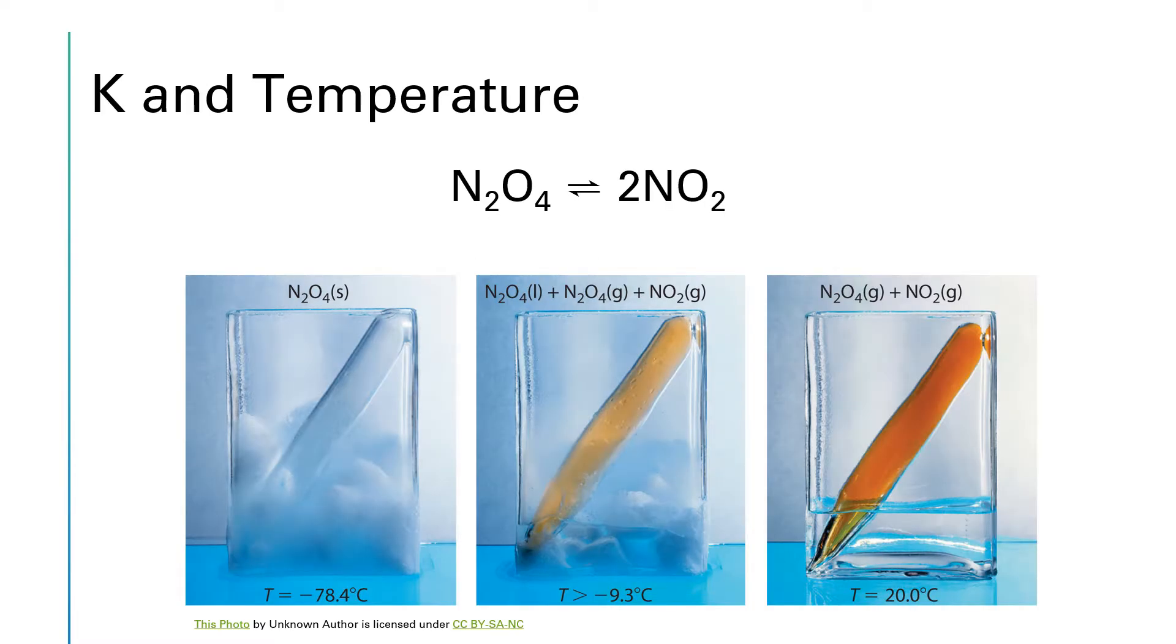If we look at the equilibrium between N2O4 and NO2, we can see some interesting effects. For instance, the N2O4 molecule is colorless, but the NO2 molecule is kind of a red-brown color. If we allow this equilibrium to be established at different temperatures, these equilibria look very different. If we're at a very cold temperature, once the equilibrium has been established, there's no color to it. That's what we're seeing down here in this first image. We're at a very cold temperature, minus 78.4 degrees C.